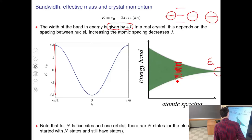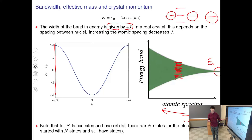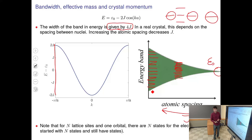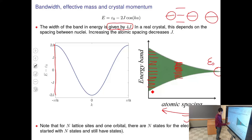Just like with phonons, the chain has a fixed number of atoms n, so not all k values are allowed — only those satisfying boundary conditions. The spacing between allowed k-points is 2π/a divided by n. In a real solid with so many atoms you cannot resolve this spacing and it becomes, for all practical purposes, a continuous band.